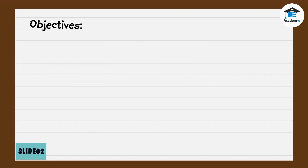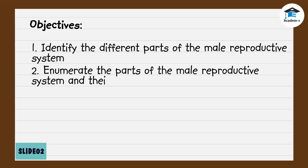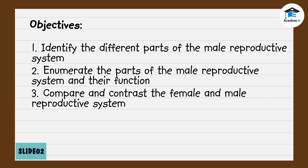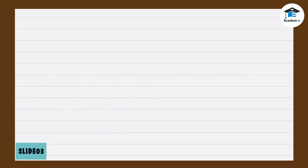Objectives: At the end of the lesson you should be able to: one, identify the different parts of the male reproductive system; two, enumerate the parts of the male reproductive system and their function; three, compare and contrast the female and male reproductive system; four, give ways on how to take care of the male reproductive organs.